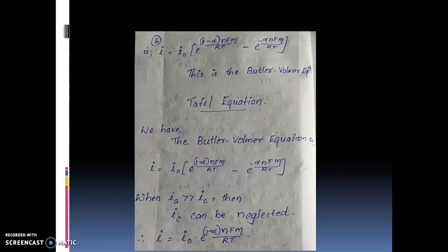This is the Butler-Volmer equation: i equals i0 multiplied by [e raised to (1−α)·n·F·eta divided by RT, minus e raised to minus α·n·F·eta divided by RT]. This equation was derived starting from the oxidized state plus electron giving reduced state, using the forward rate constant kc and backward rate constant k, applying the law of mass action and the overpotential substitution.